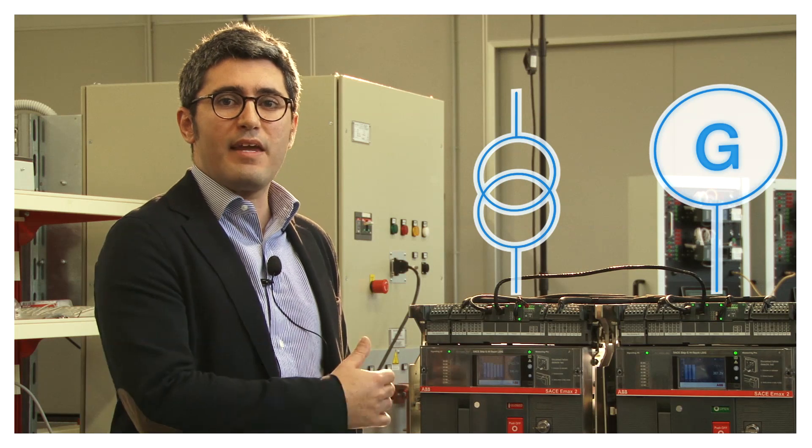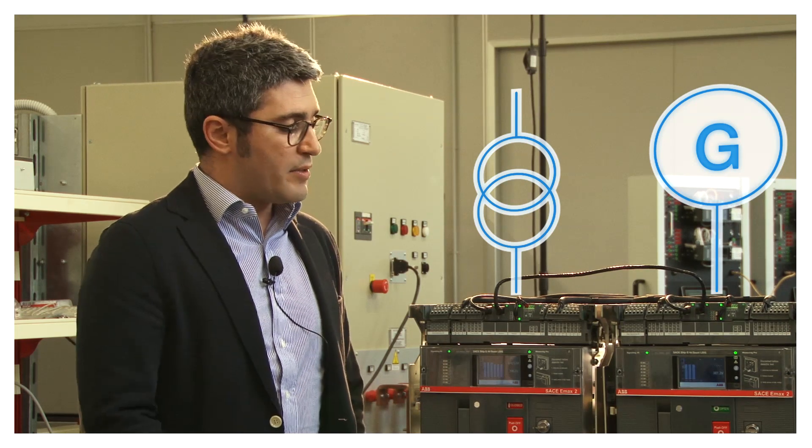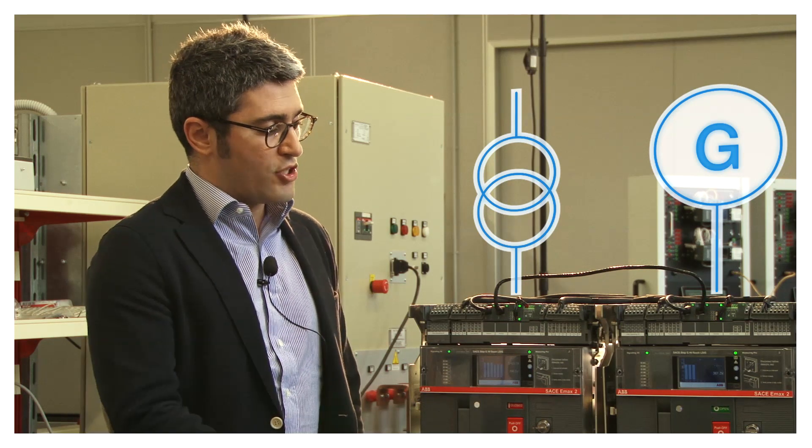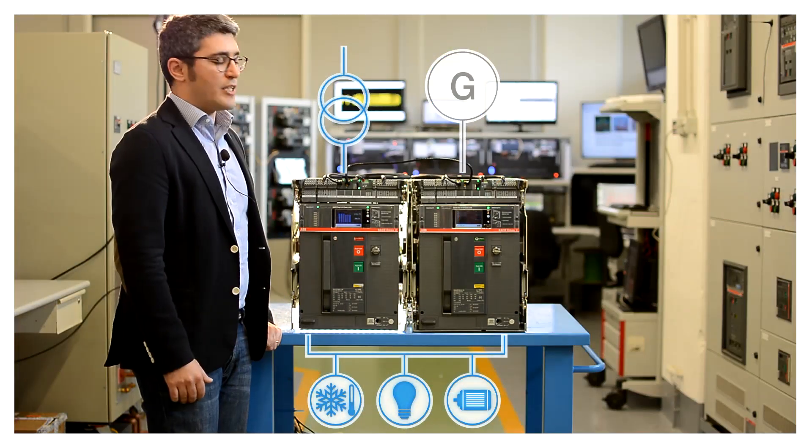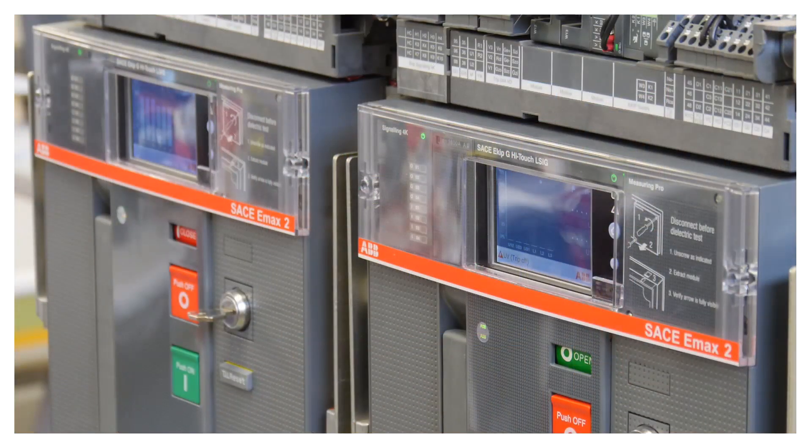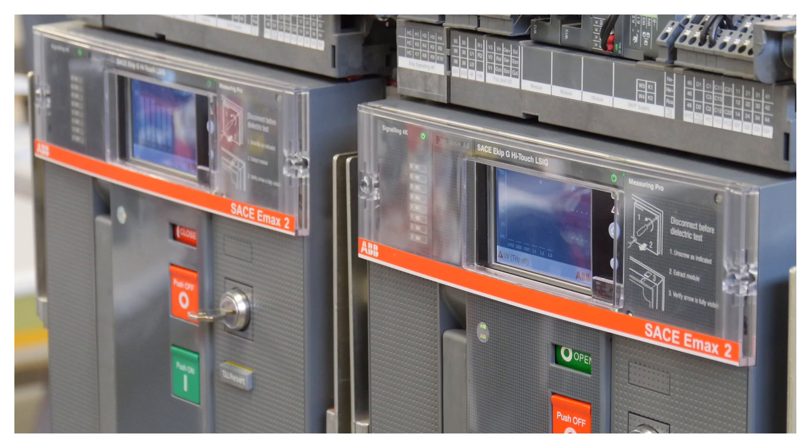As soon as the main line is 100% ok, the generator line or the emergency line opens the circuit and so we come back to the first situation, the first scenario where we can supply all loads from the main grid.